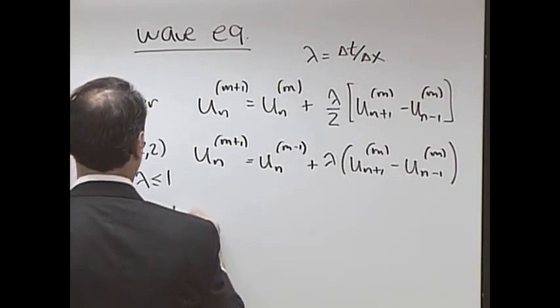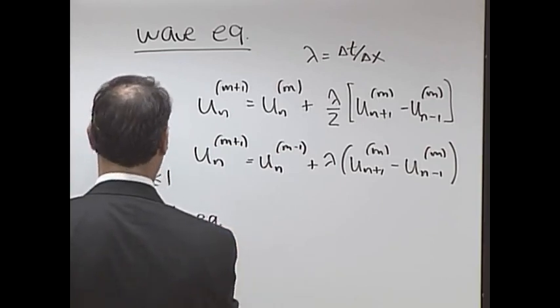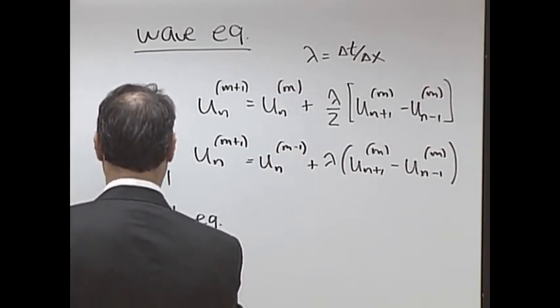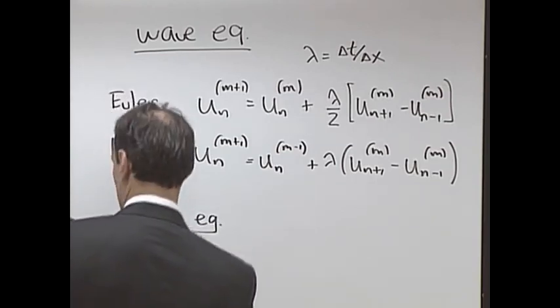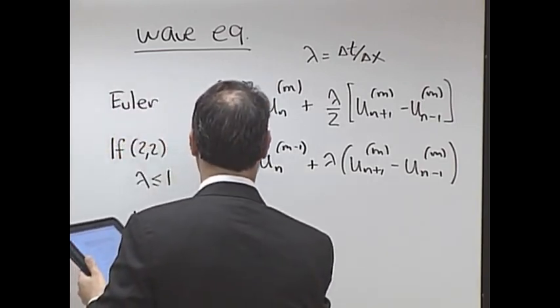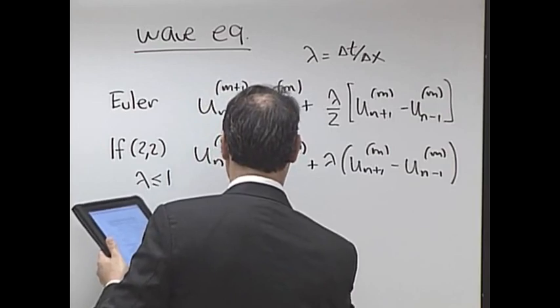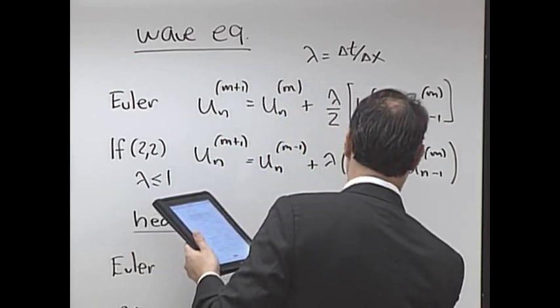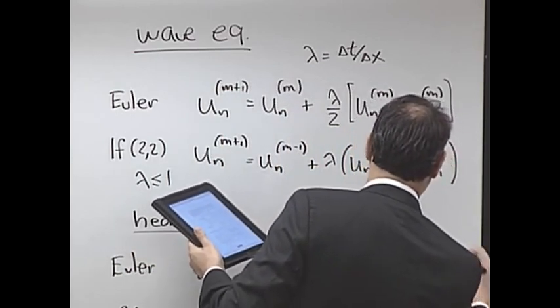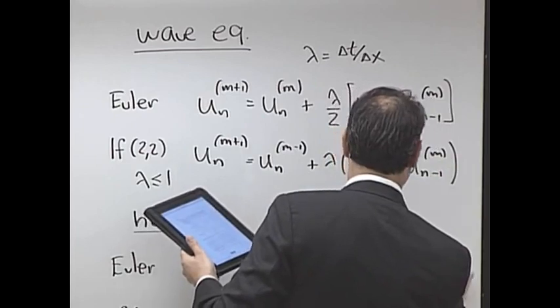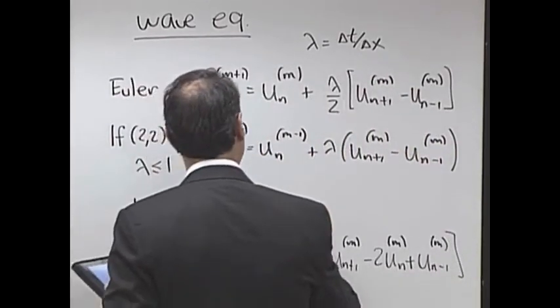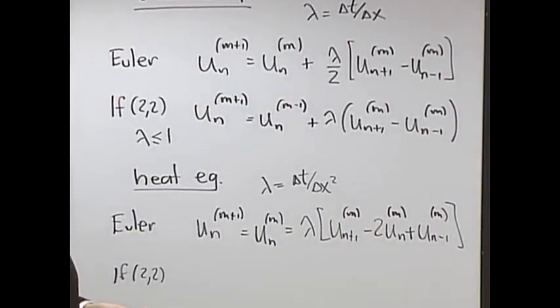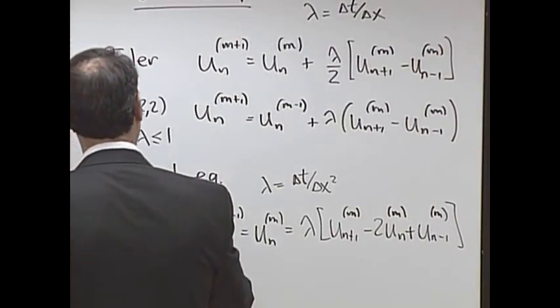Now, for the heat equation, let's write down the schemes. Here it is for Euler, and for LeapFrog 2-2. For Euler, you get u of n, m plus 1 equals u of n, m plus lambda. And now you have u of n plus 1 minus 2 u of n plus u of n minus 1, all evaluated at m. And now lambda equals delta t over delta x squared. That was Euler, and that was stable for lambda less than or equal to half.